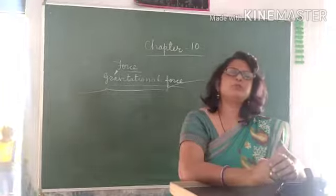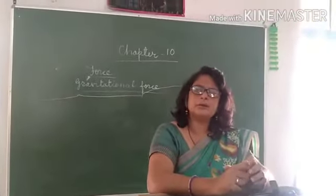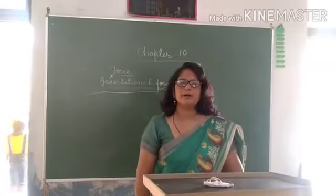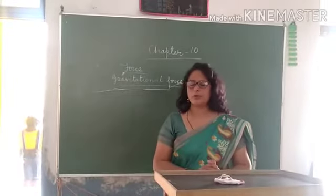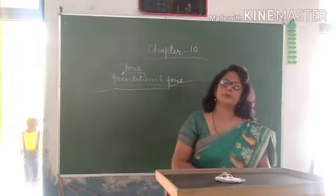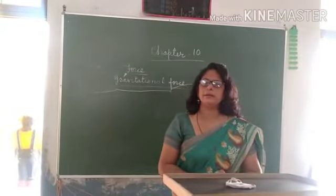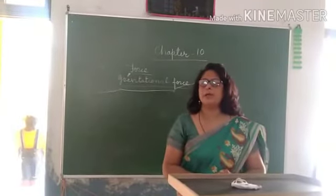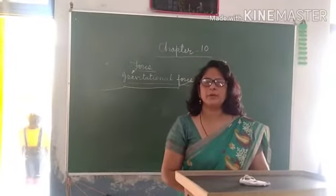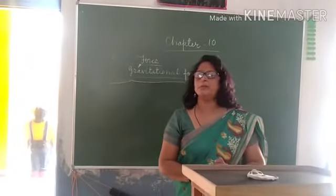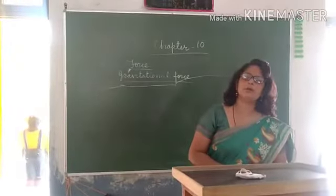For a simple example: if you throw a heavy object, it falls to the floor quickly. But if you throw a light object, it takes much more time to fall to the floor. This happens because the light object feels less gravitational force, and due to that it takes more time to fall. Gravitational force depends on the mass or weight of any object.